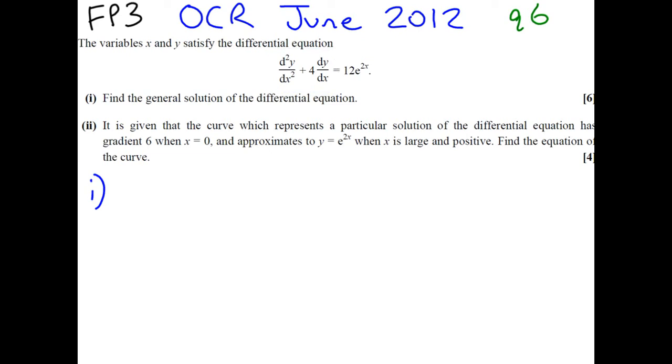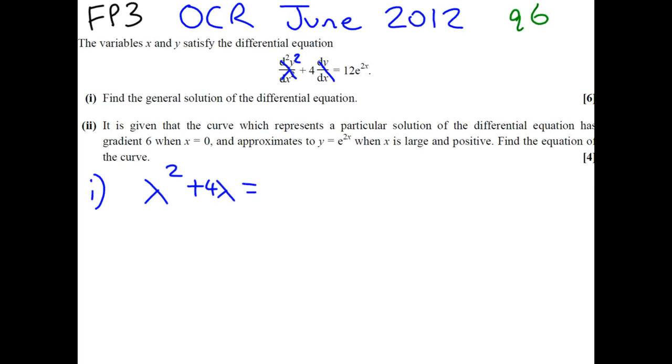So, let's get on with the job at hand. To find the complementary function, we need to first investigate the auxiliary equation, which is λ² plus 4λ equals 0. You can see that we've just put λ² for d²y/dx² and λ for dy/dx. This is our trick to find our solutions.